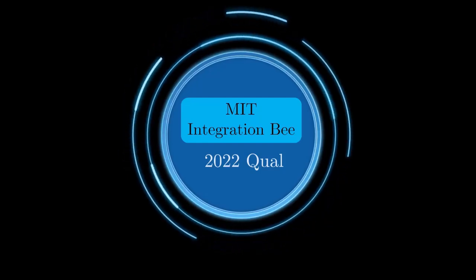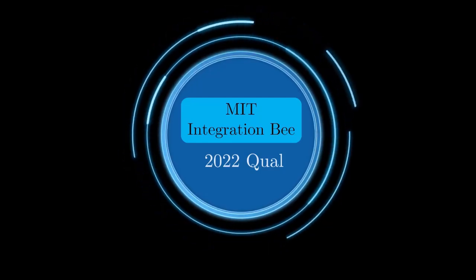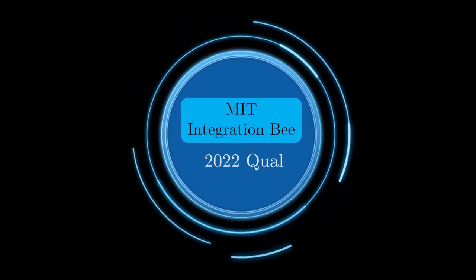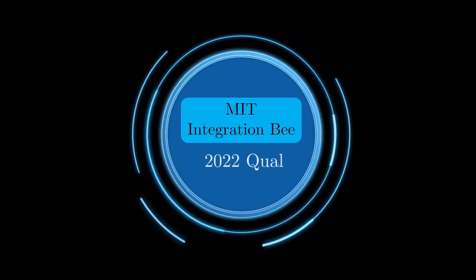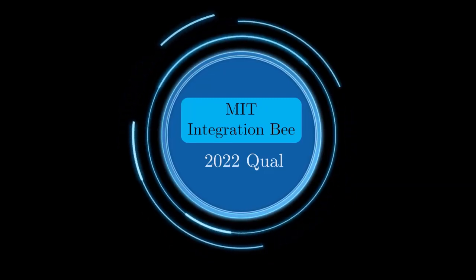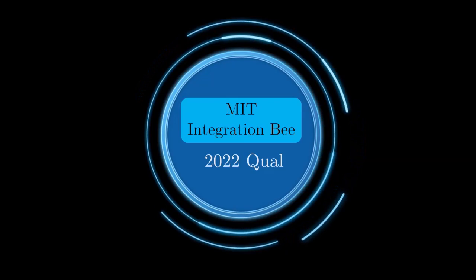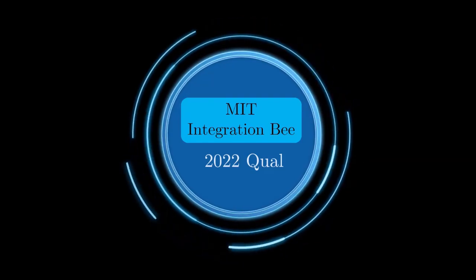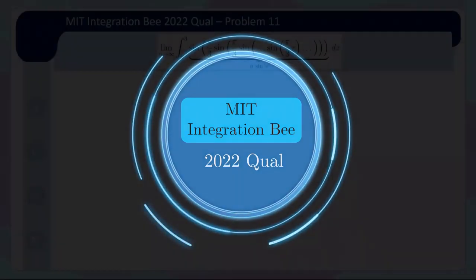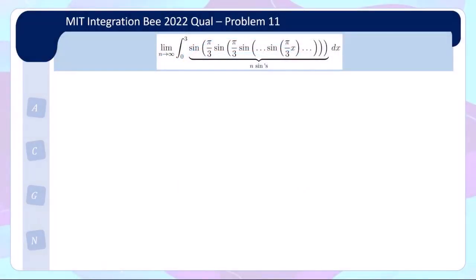Welcome to the second video on the MIT Integration Bee 2022 qualifying round. In this video, we'll be covering even more interesting questions. So without further ado, let us take a look at problem number 11. For this problem, we have an infinite string of nested sines. If you'd like to give this question a go, feel free to pause the video now.